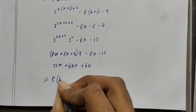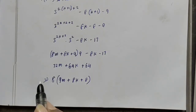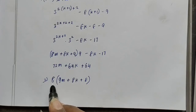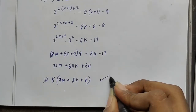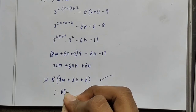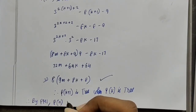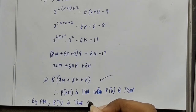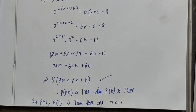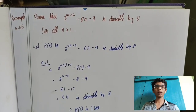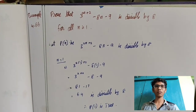We see that the entire expression is a multiple of 8, so it is divisible by 8. Therefore P of k plus 1 is true whenever P of k is true. By mathematical induction, P of n is true for all n greater than or equal to 1. I hope you understood this sum in this video. Please subscribe to the MassMinded channel and enable the bell notification so that we will see you in the next video. Thank you.